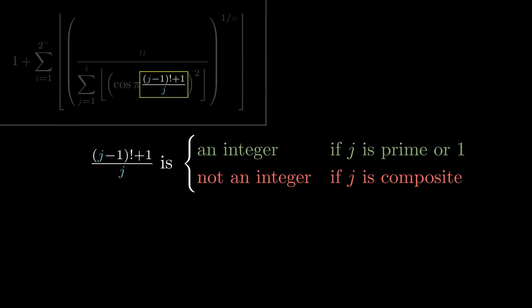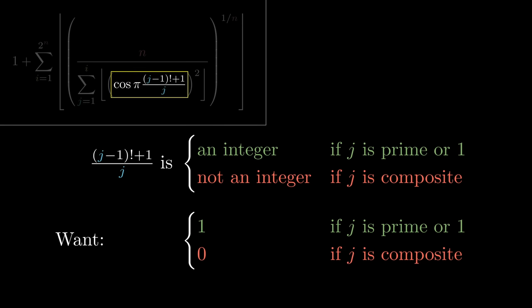First, it helps to modify our prime detector so that it outputs ones and zeros, rather than integers and non-integers. This will make it much easier to work with. To convert integers to ones and non-integers to zeros, we need an integer detector. So what kind of traditional function can distinguish between integers and non-integers? If we look back at the formula, we see what Willans came up with. The next operation is to multiply by pi and plug the result into cosine.